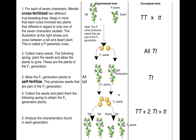His first experiment was to take tall plants and cross them with short plants using his cross-fertilization method. They produced seeds called the filial 1 generation, or F1 generation. When he planted those seeds, he found that all of the plants that grew had the phenotype of tall — the tall parent. He could not find any short plants in that first generation, so right away he discerned that the tall trait was dominant over the short trait.